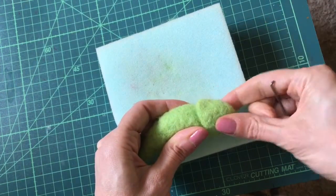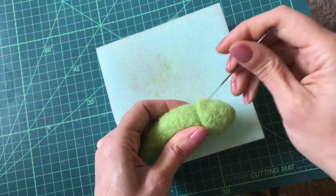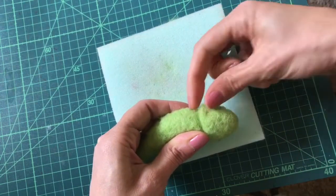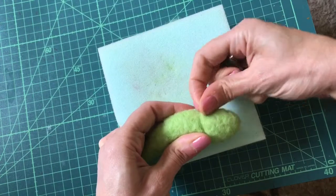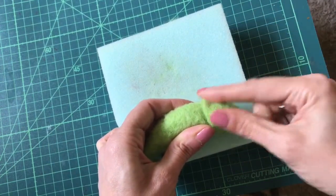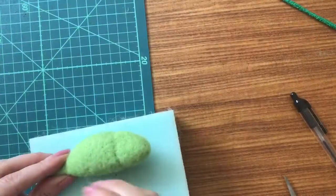Otherwise when you attach, if it's too skinny, when you attach the eyes later it won't work very well. So just needle felt and use your fingers to manipulate the wool. Getting the shape nice and even.